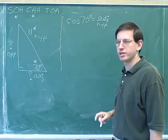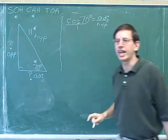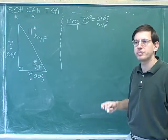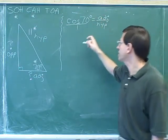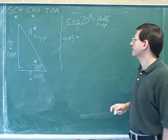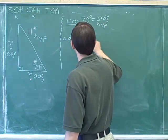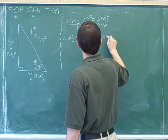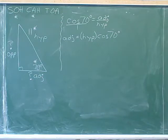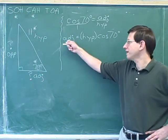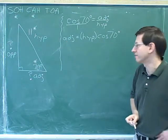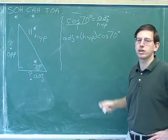Cross-multiplying is a good way to get rid of the fractions. When we cross-multiply, we multiply diagonally: 1 times the adjacent side is just the adjacent side, and multiplying diagonally the other way, we get the length of the hypotenuse times the cosine of 70 degrees. This gives us a straightforward way to figure out the adjacent side — it's just the hypotenuse times the cosine of 70, or more generally, the hypotenuse times the cosine of the angle.